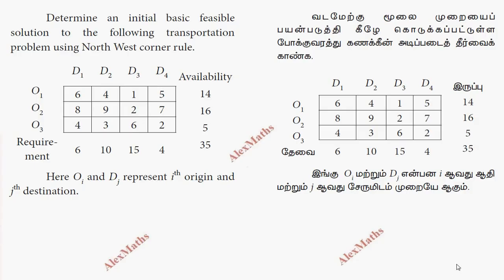Hi students, this is Alex here in the video. We'll find an initial basic feasible solution for a transportation problem using the North-West Corner Rule. The North-West Corner Rule is used only for finding the initial basic feasible solution.